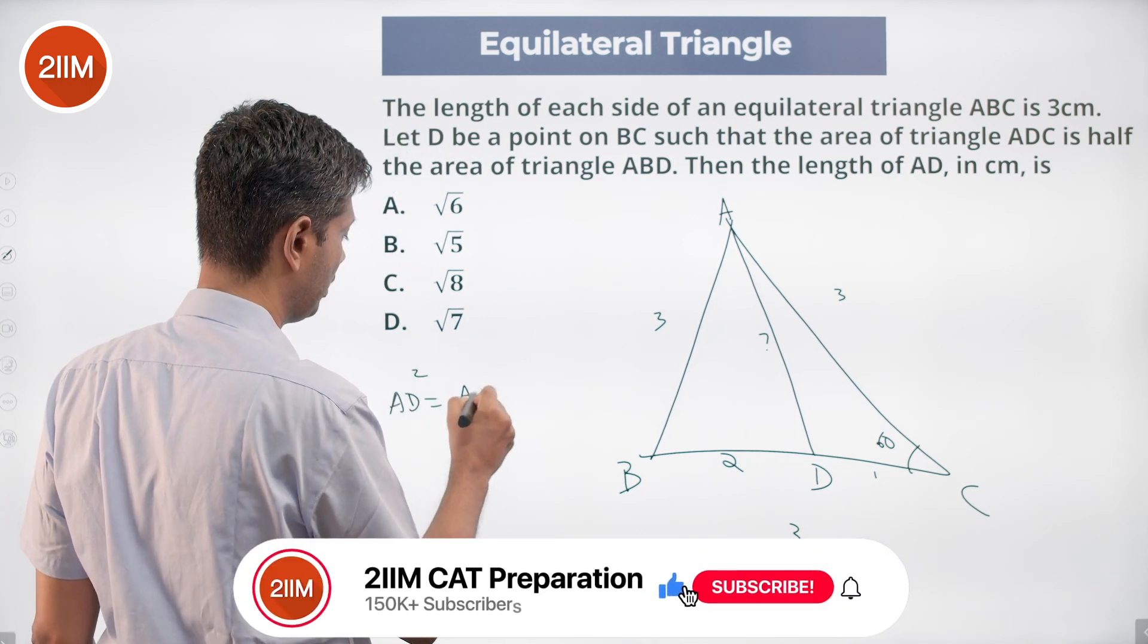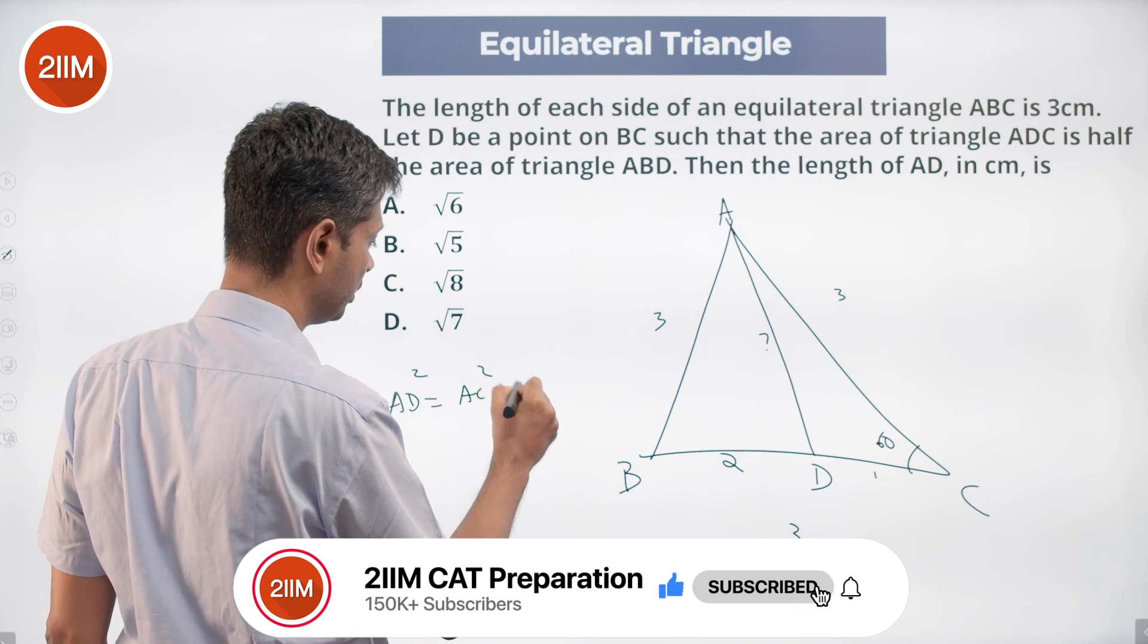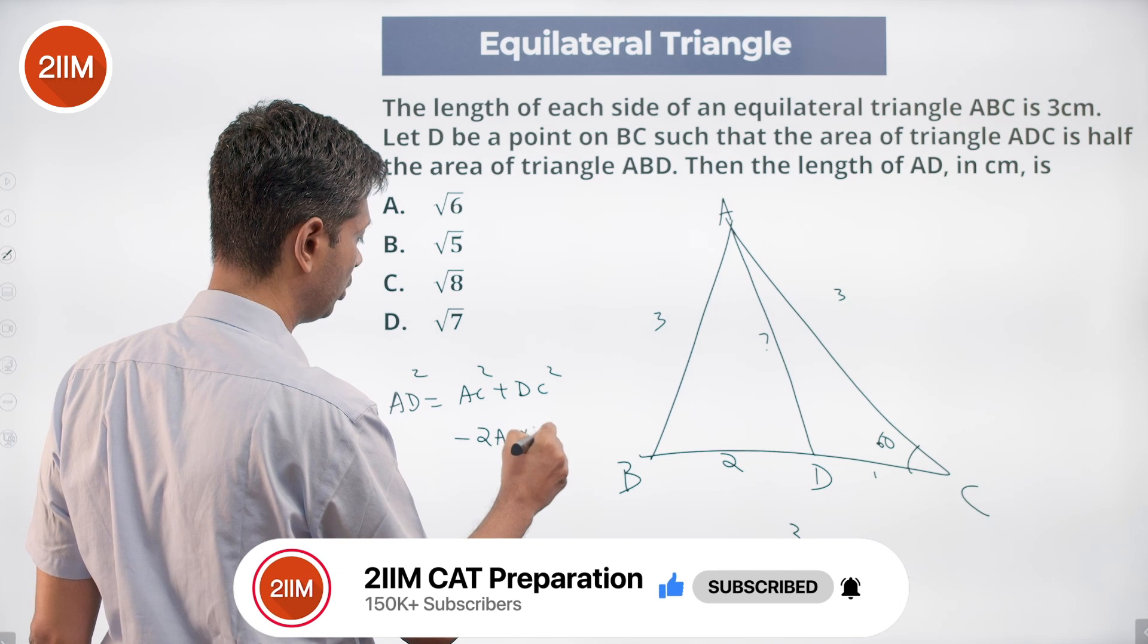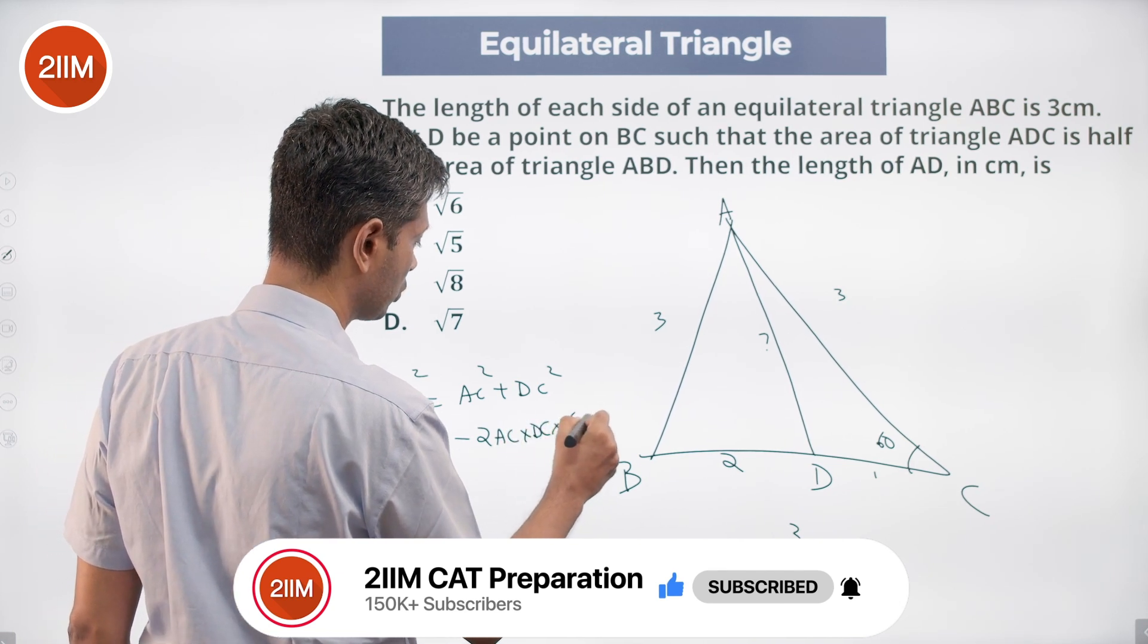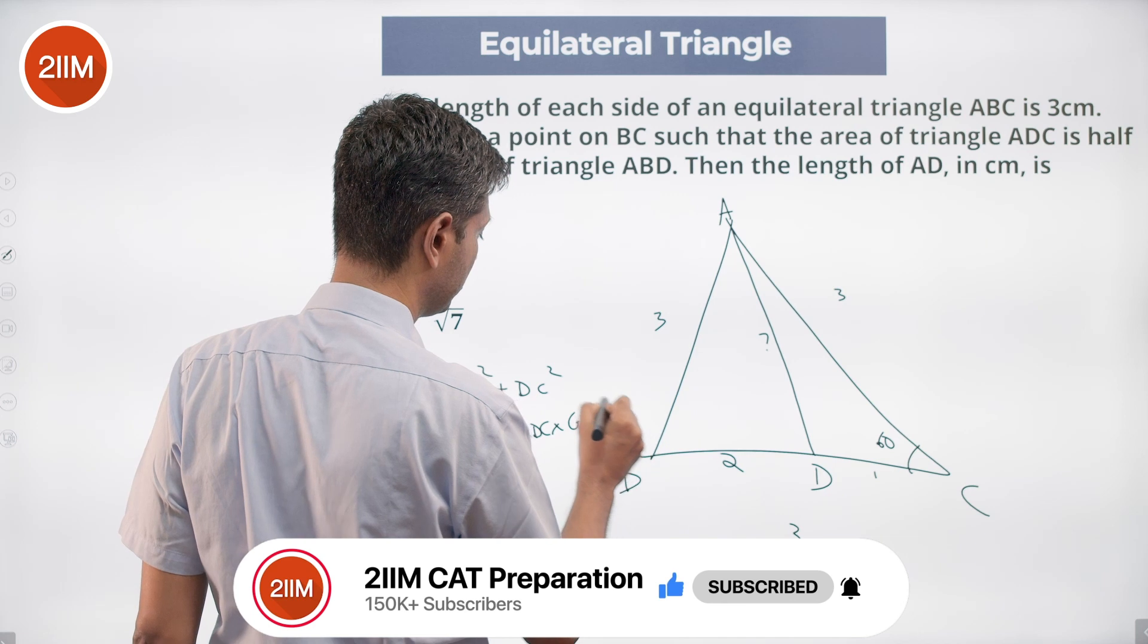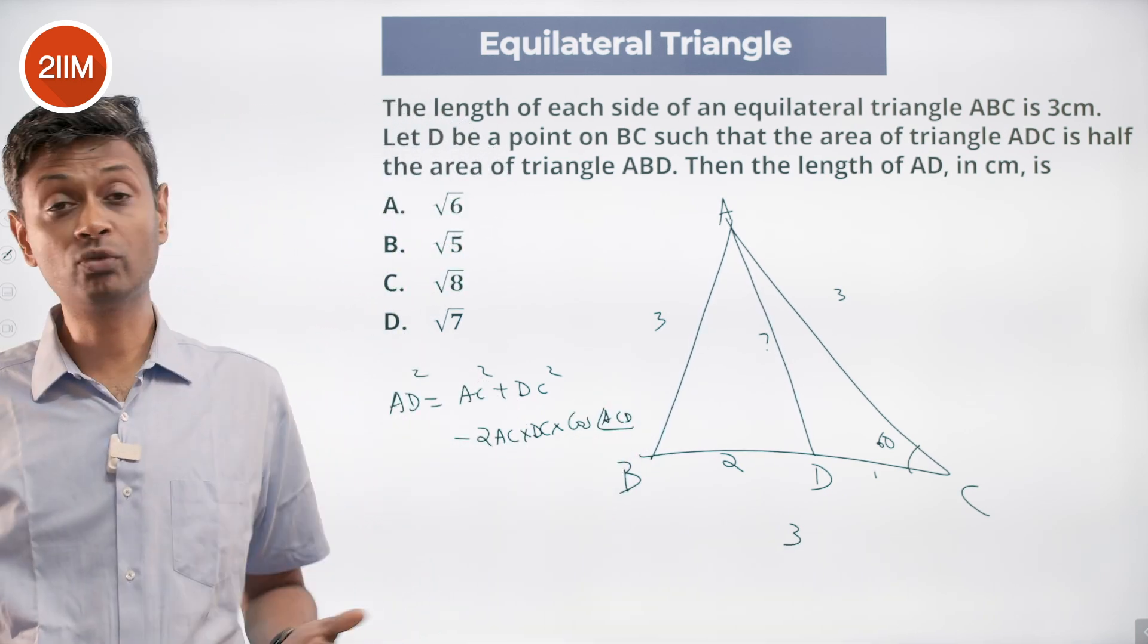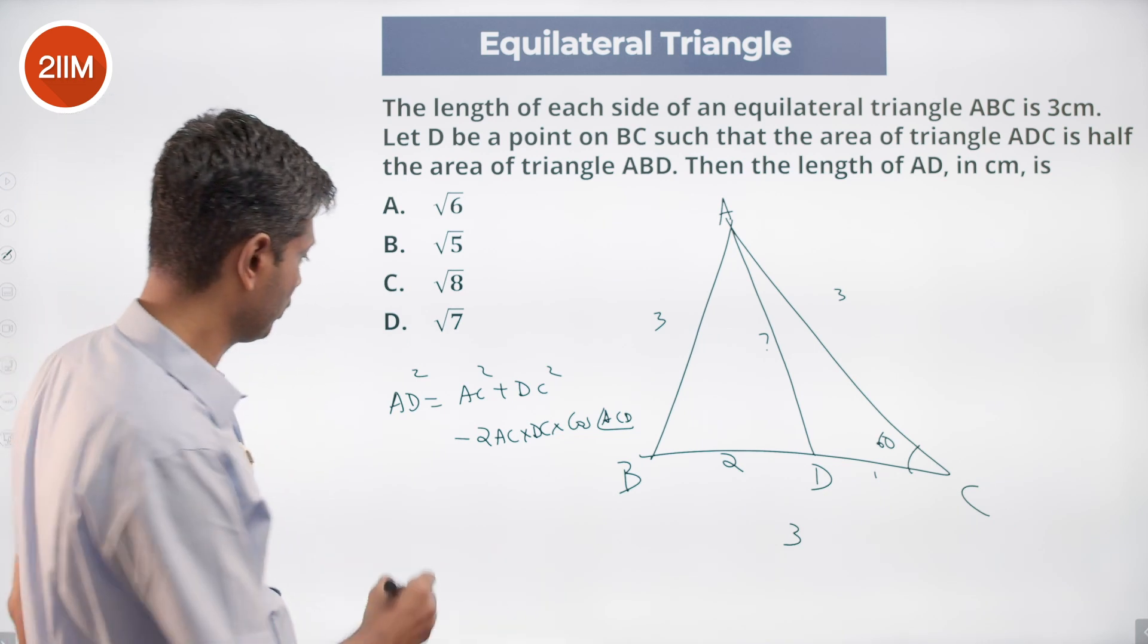AD squared in that triangle is AC squared plus DC squared minus 2 times AC times DC times cos angle ACD. Direct plugging in of cosine rule, nothing else. But you've got to know cosine rule to have a crack at this.